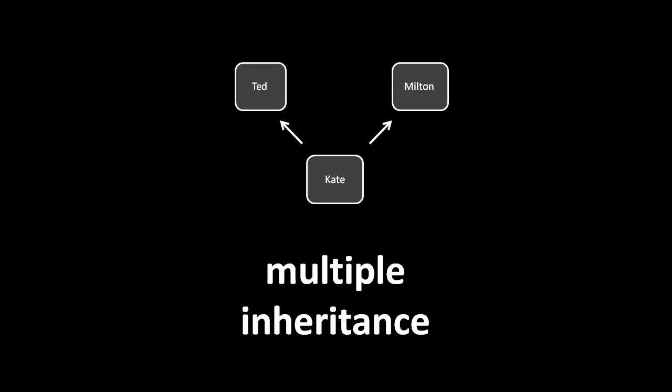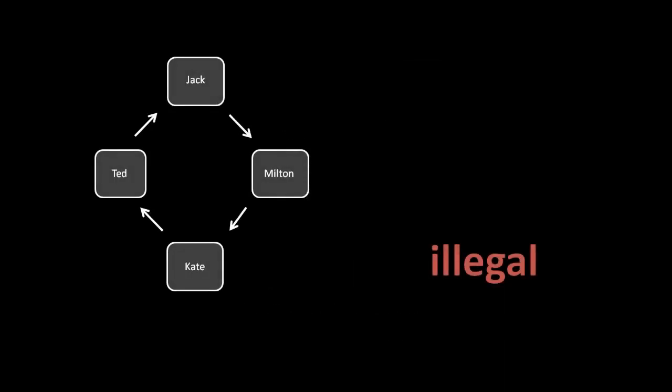On the other hand, multiple inheritance may sometimes come in useful, as it allows us to take multiple existing classes and mix them together, combining the features of multiple classes into one. What's definitely not allowed in any language, though, is circular inheritance, wherein a class ends up indirectly inheriting from itself — like Kate inheriting from Ted, Ted from Jack, Jack from Milton, and then Milton inheriting back from Kate. No languages allow this because it simply doesn't make any sense.